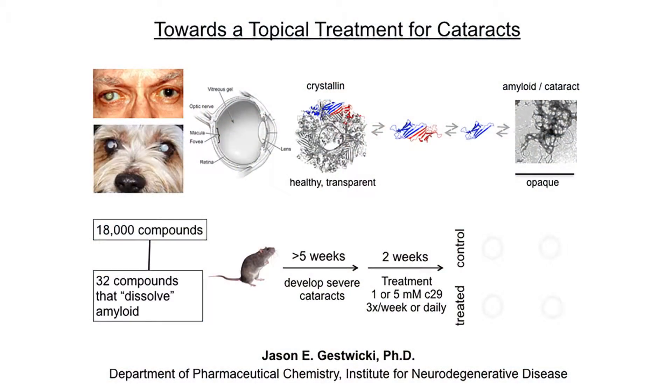Cataracts are protein aggregation in the lens of the eye that leads to blindness. Almost everyone here has seen a dog with that cloudy appearance in the lens — a sort of milky white appearance in the eye of an older dog. Almost all dogs by age eight, and almost every single dog by age thirteen, has vision impairment from cataracts. When you start to get protein aggregation in the lens, that protein aggregate is opaque — it's not transparent anymore. Your retina can see, your brain can see, but light can't penetrate through your lens and into the retina, so you become functionally blind.